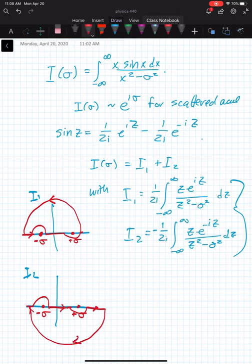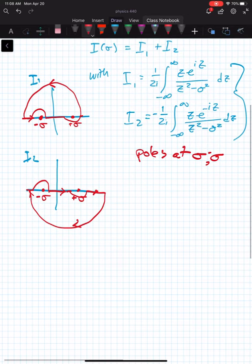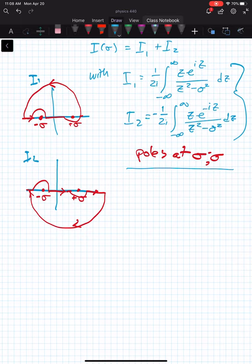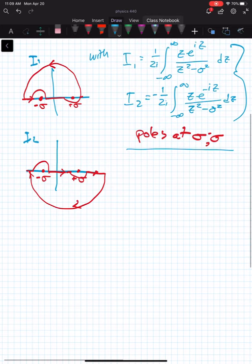So we have poles, obviously, at sigma and minus sigma. So our next step is what? Give you a second to think of what we should do here first. If you said find the residues, you're right. If you didn't, that's okay. You've only been dealing with this for a day and a half.